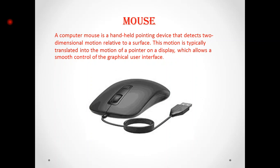Left click: the left mouse button is used to select or execute a program. If we click once with the left mouse button, the icon of the program is selected. If we double-click the left mouse button quickly, it executes the program.